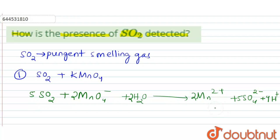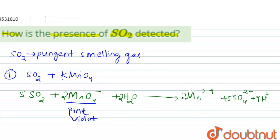This is the balanced reaction. How can this reaction be used for testing sulfur dioxide? Before the reaction, when MnO₄⁻ is present, the color of the solution is pink-violet. But after the reaction, due to the formation of Mn²⁺, the solution becomes colorless.